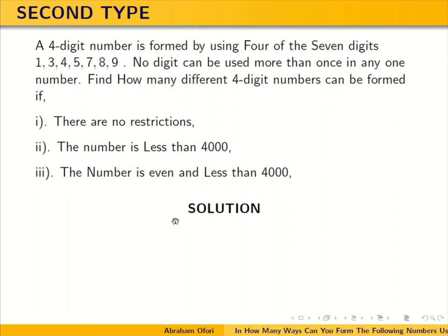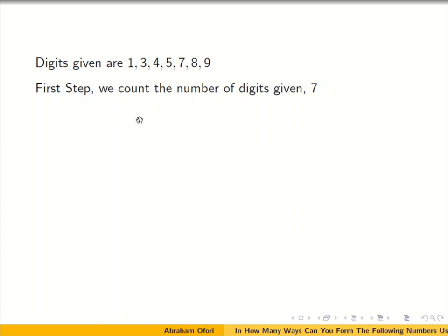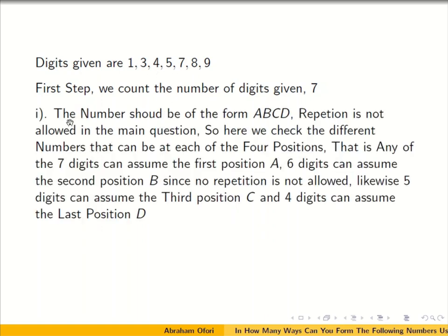Solution. The digits given are 1, 3, 4, 5, 7, 8, and 9. We count the numbers and the number of digits is 7. The number should be of the form A, B, C, D — meaning the 4-digit number has 4 positions.